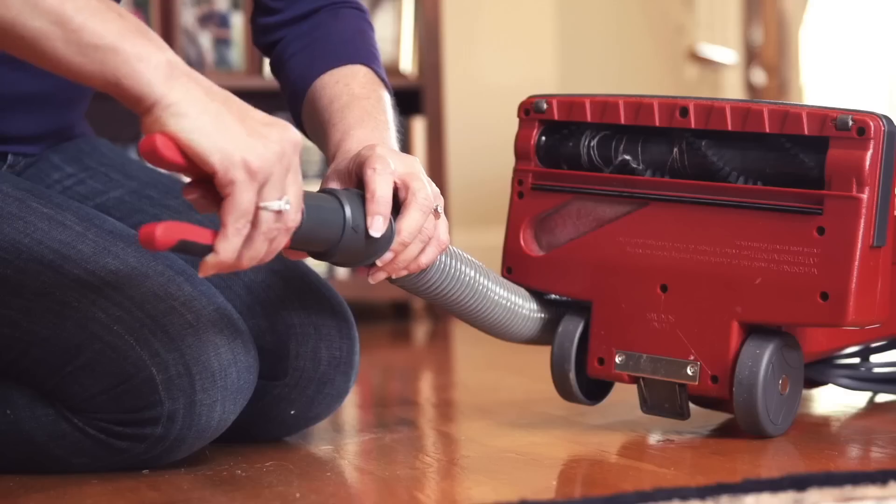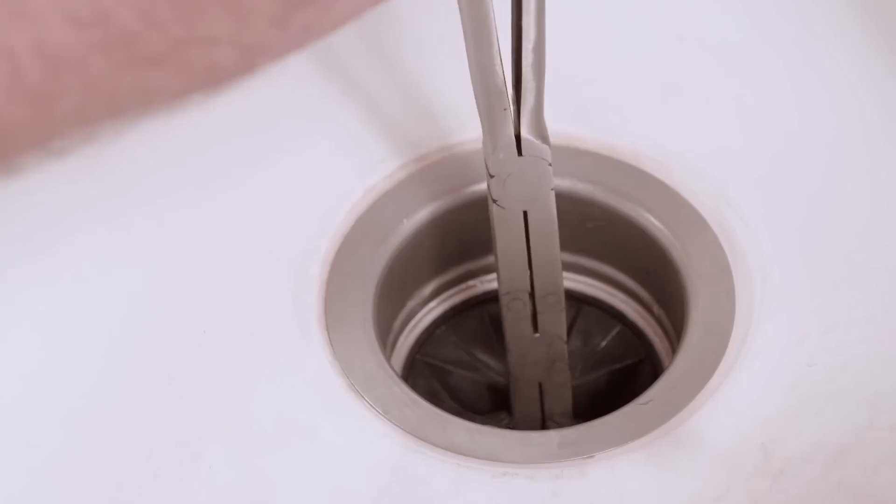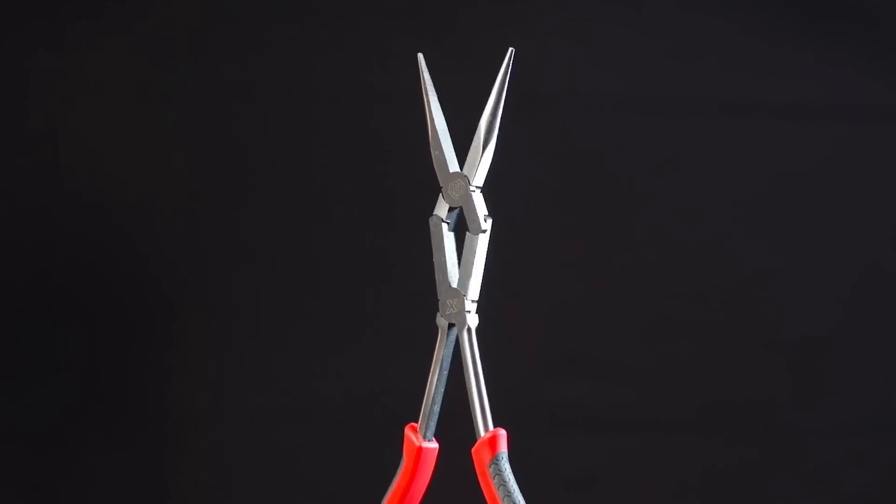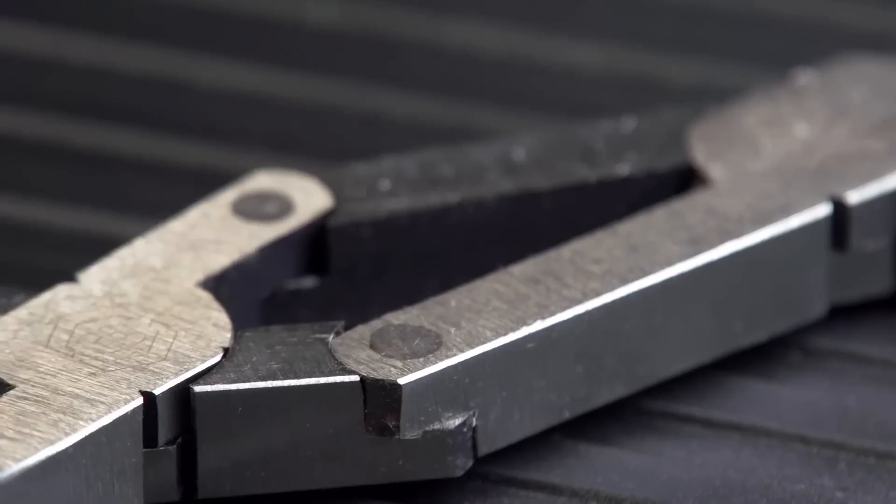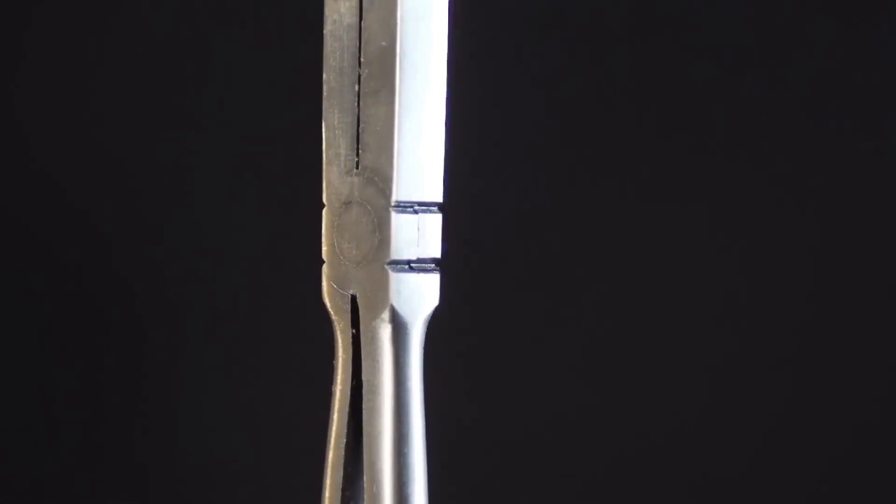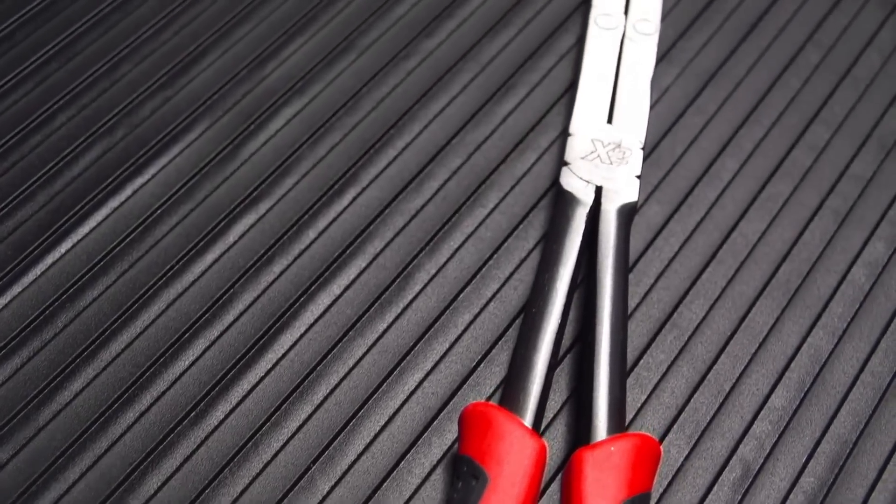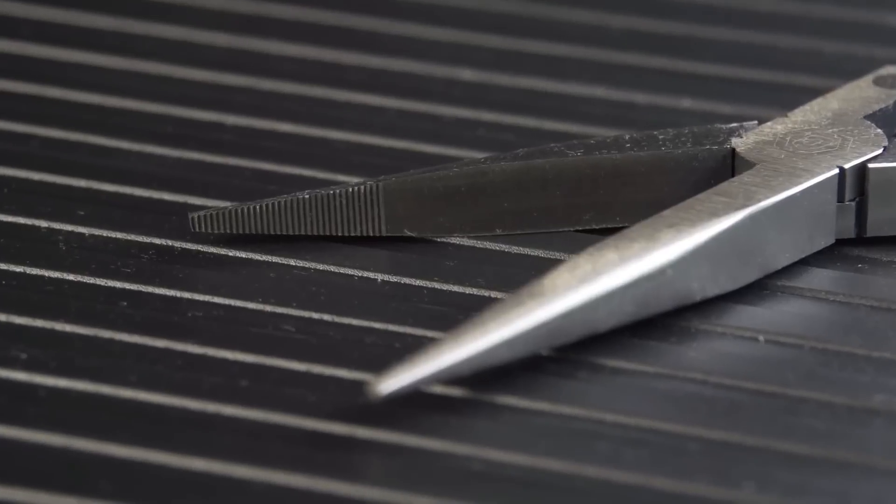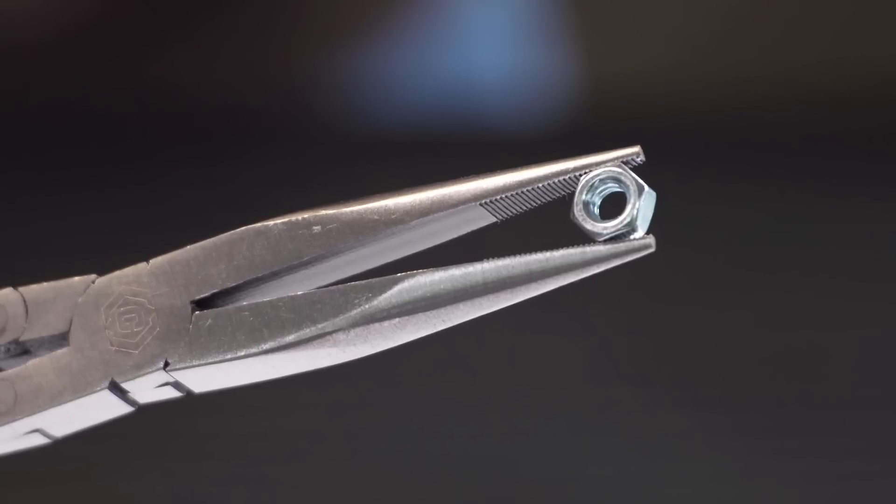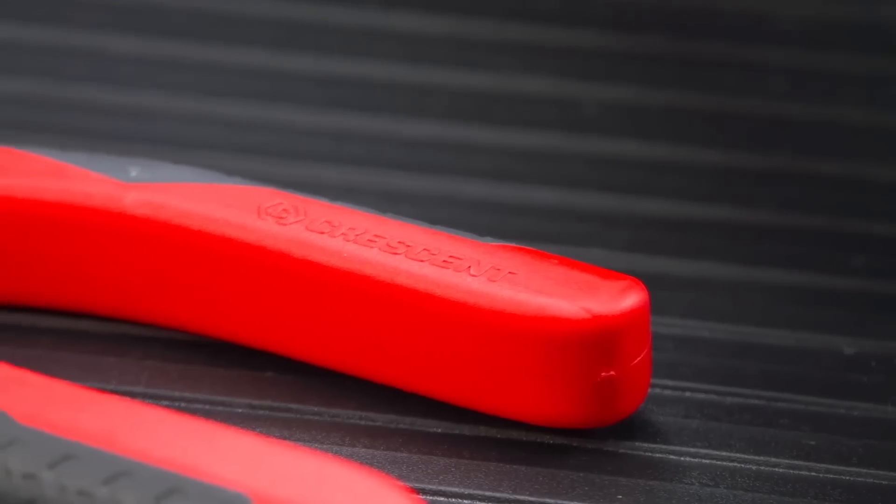Milled grooves in the tips of these pliers grip fasteners and other objects tightly, ensuring a secure hold on any material made from corrosion-resistant alloy steel. The crescent two pliers are designed to last and withstand the toughest of jobs. Say goodbye to frustration and hello to convenience, with the crescent two pliers, the perfect tool for any job that requires reaching into tight spaces.